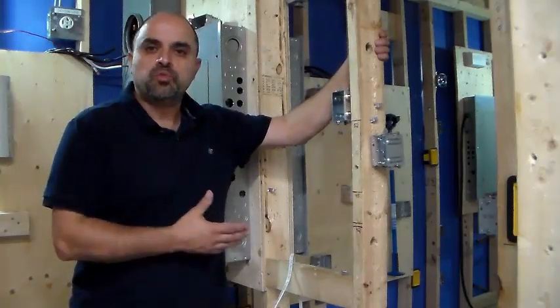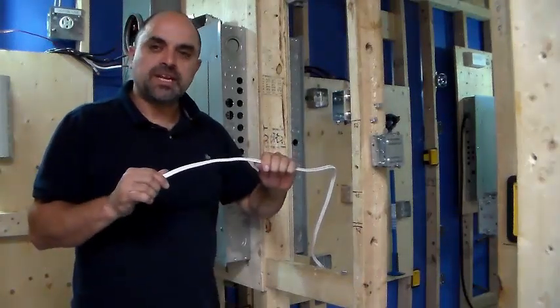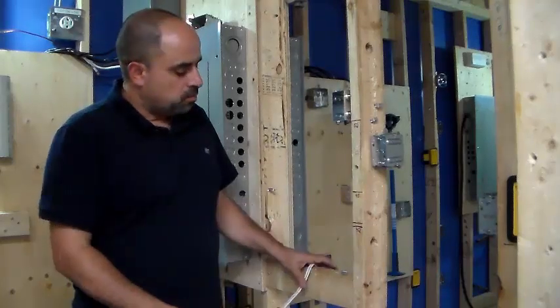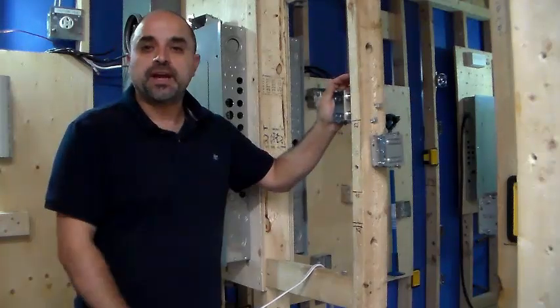In most wooden structures in residential, you use a cable called MND90, non-metallic sheath cable. It's also known as Romex cable. Most of these cables go into all the boxes of different sizes and at different heights.